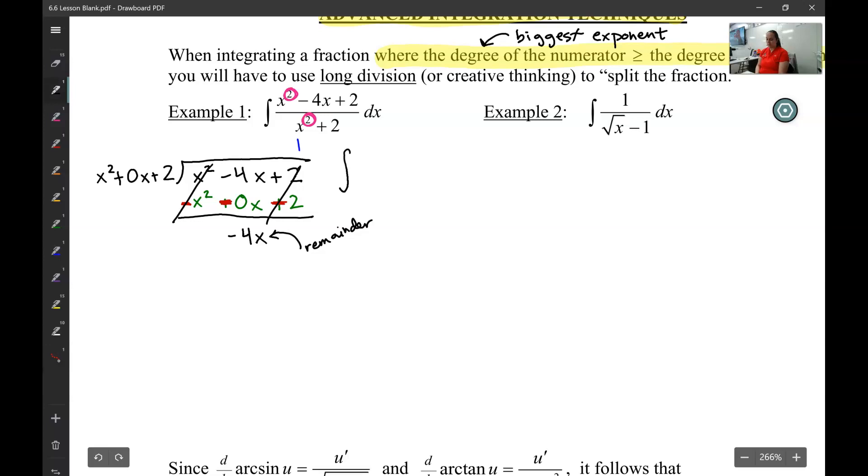So I'm going to rewrite this problem as my answer, 1, plus a fraction. And the fraction is going to be my remainder, negative 4x. Let's color code that so you can see it a little better. Let's do it orange. My remainder, negative 4x, over what I divided by, x squared plus 2.